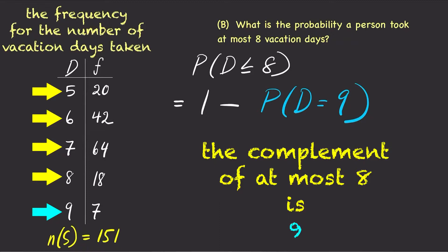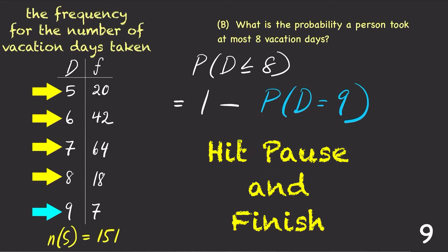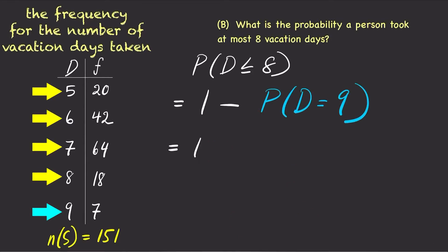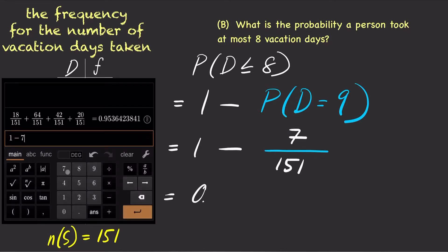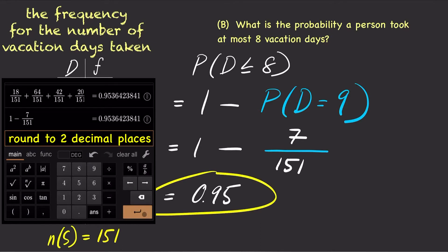Now, take a minute and complete the problem. Again, doing the problem directly or doing it by the complement rule got us the same answer, but sometimes doing the problem directly might be impossible, and in this case the complement rule is much quicker and much easier.